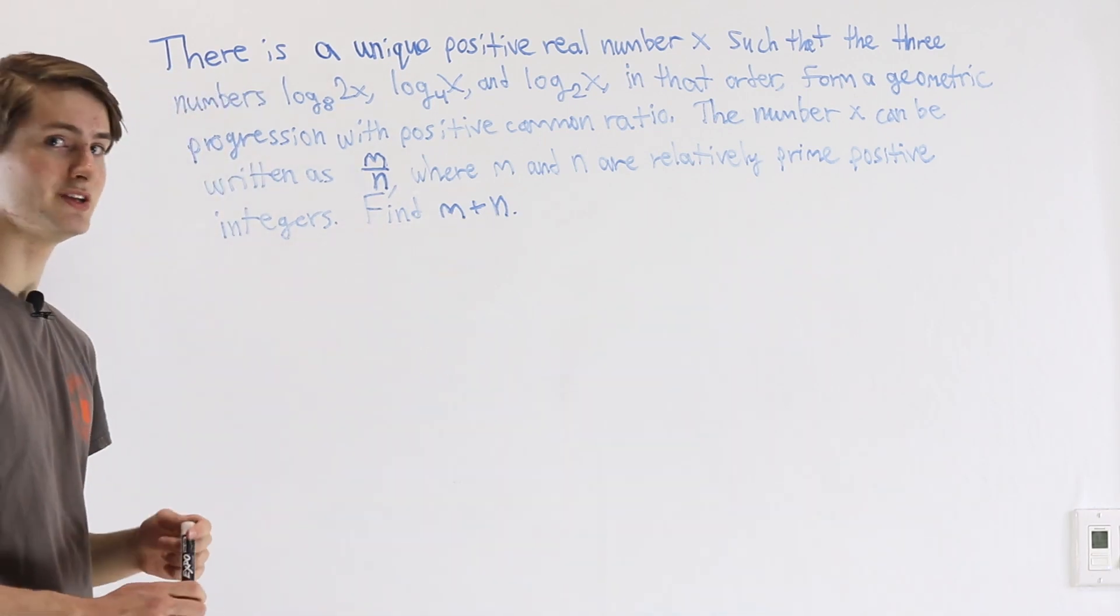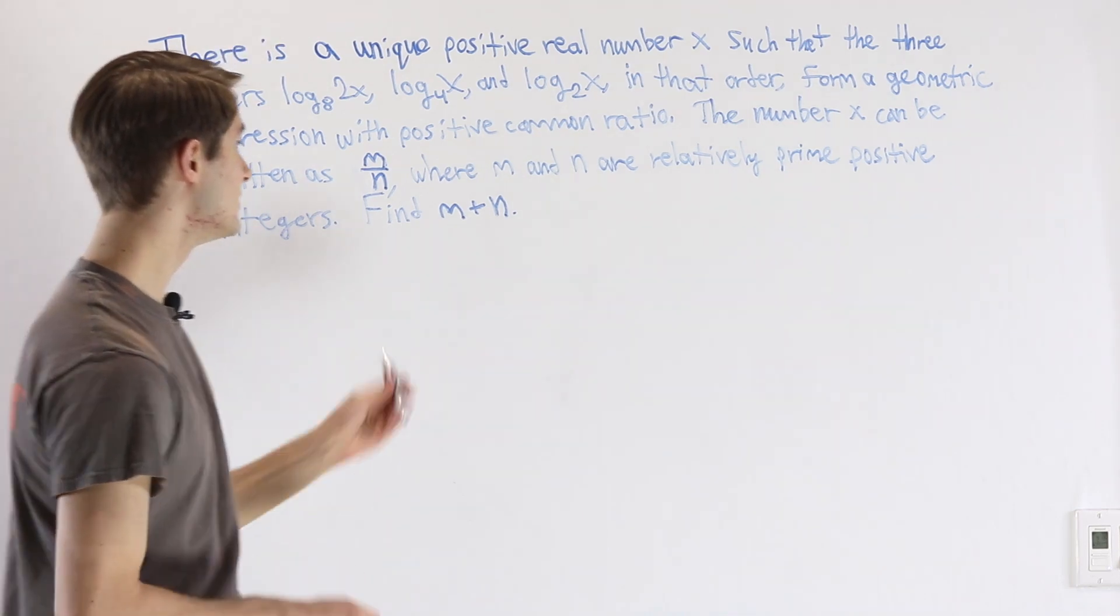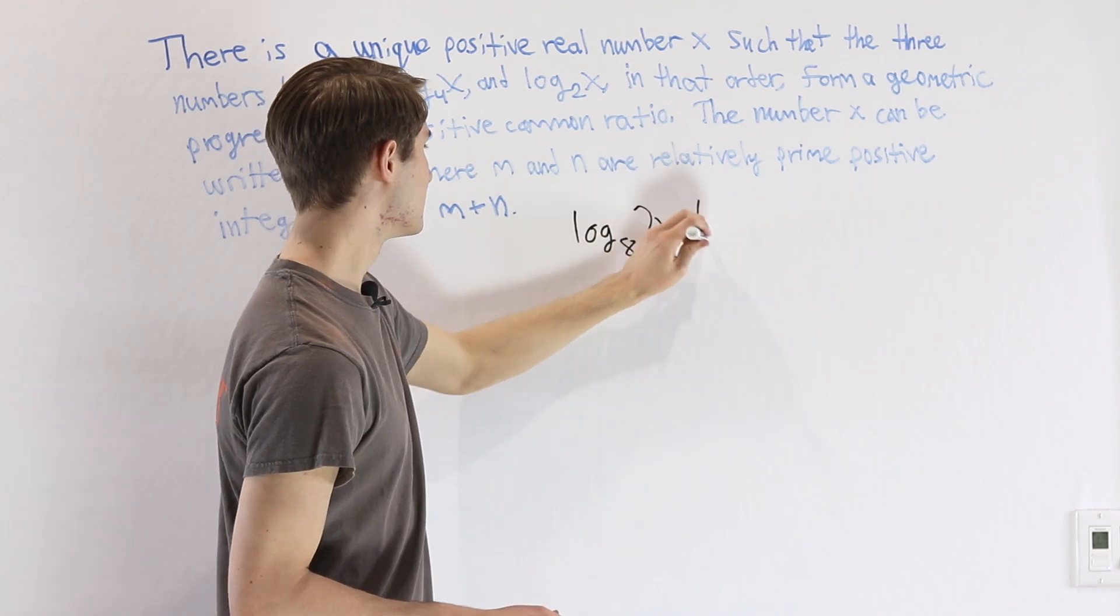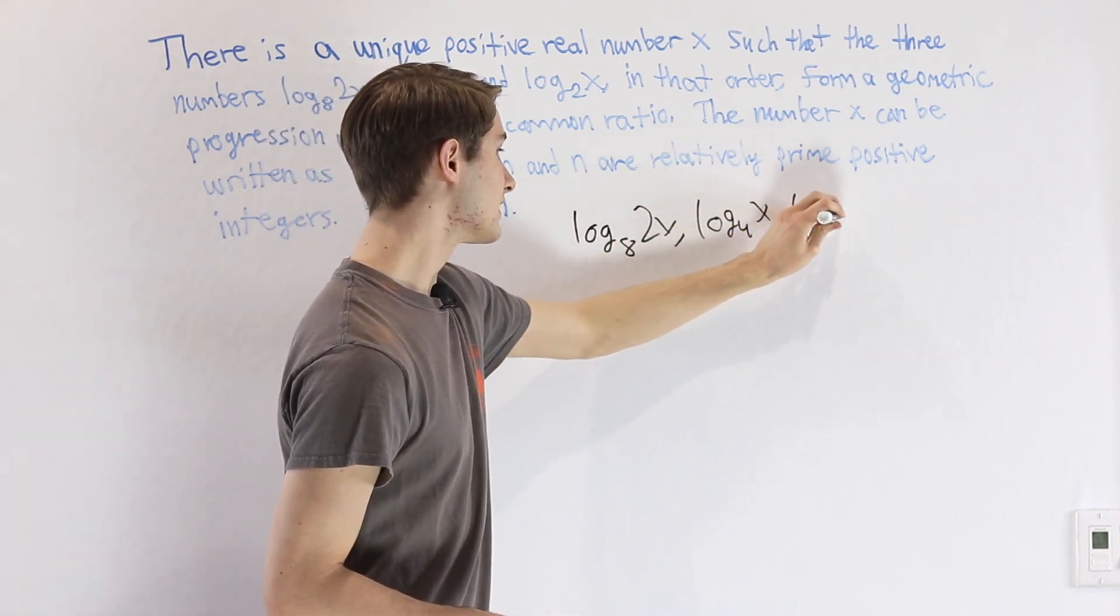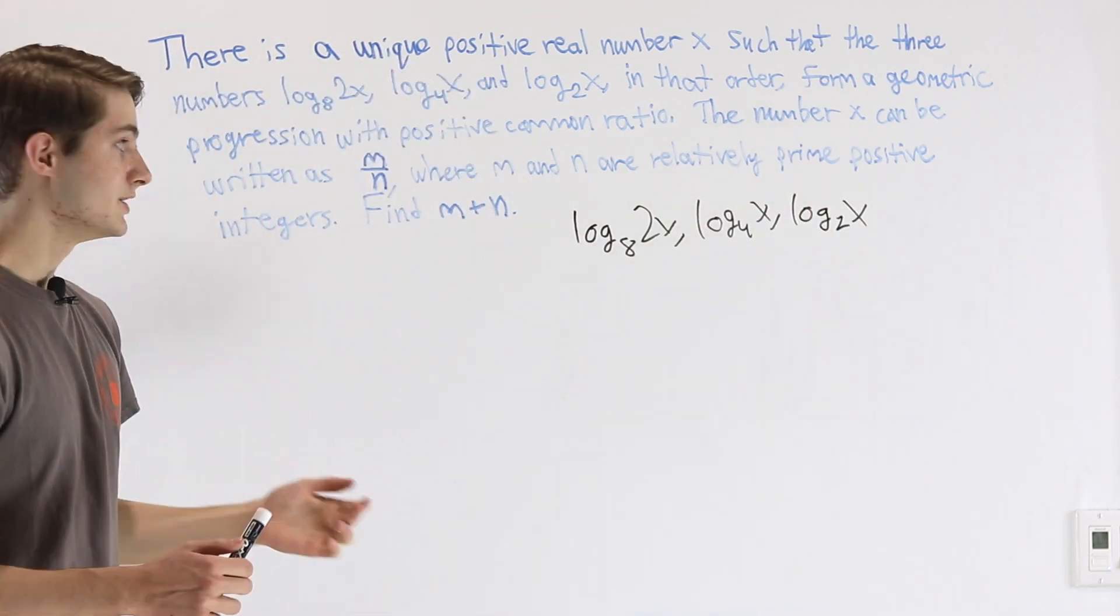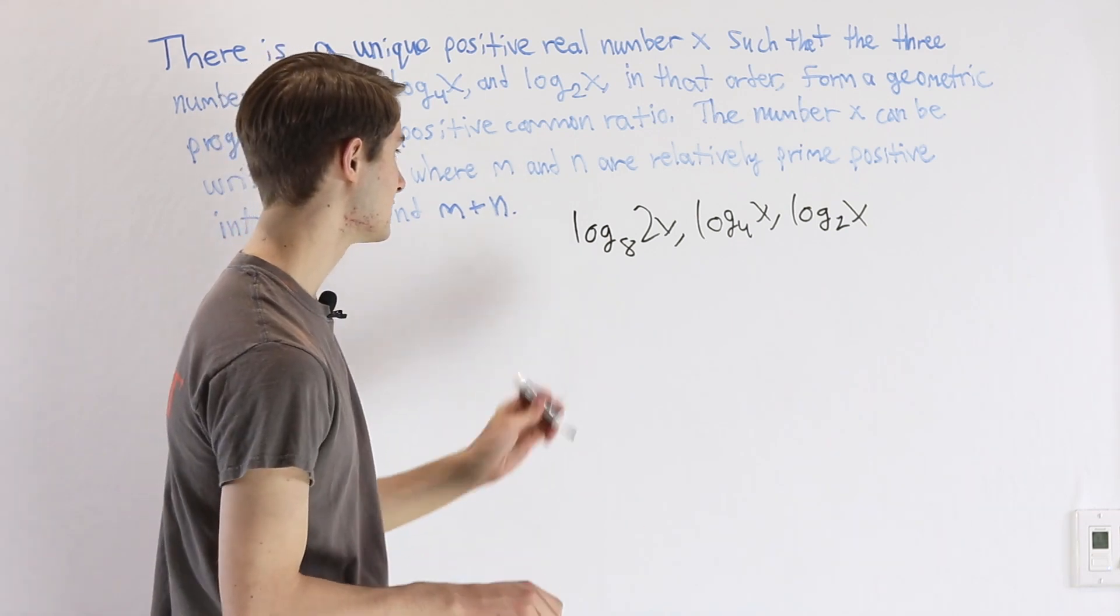We want to find m plus n. Now the first thing I think when we look at this geometric progression log base 8 of 2x, log base 4 of x, and log base 2 of x is these logarithms aren't doing any really difficult stuff. They're not nested or anything like that to make it more complicated.